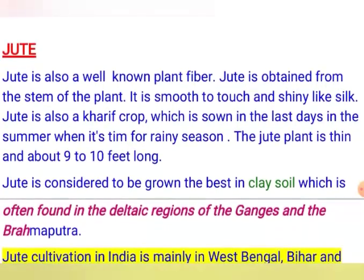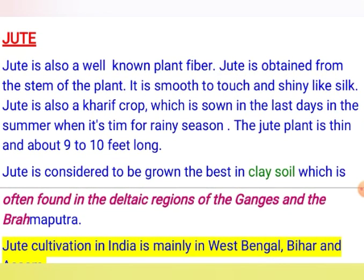Another plant fiber is jute. Jute is also a well-known plant fiber. Unlike cotton, which is obtained from the cotton ball (the fruit), jute is obtained from the stem of the plant. It is a smooth, silky, and shiny fiber. Jute is also a kharif crop, sown in the last days of summer when it is time for the rainy season. The jute plant is thin and tall — about nine to ten feet in length.